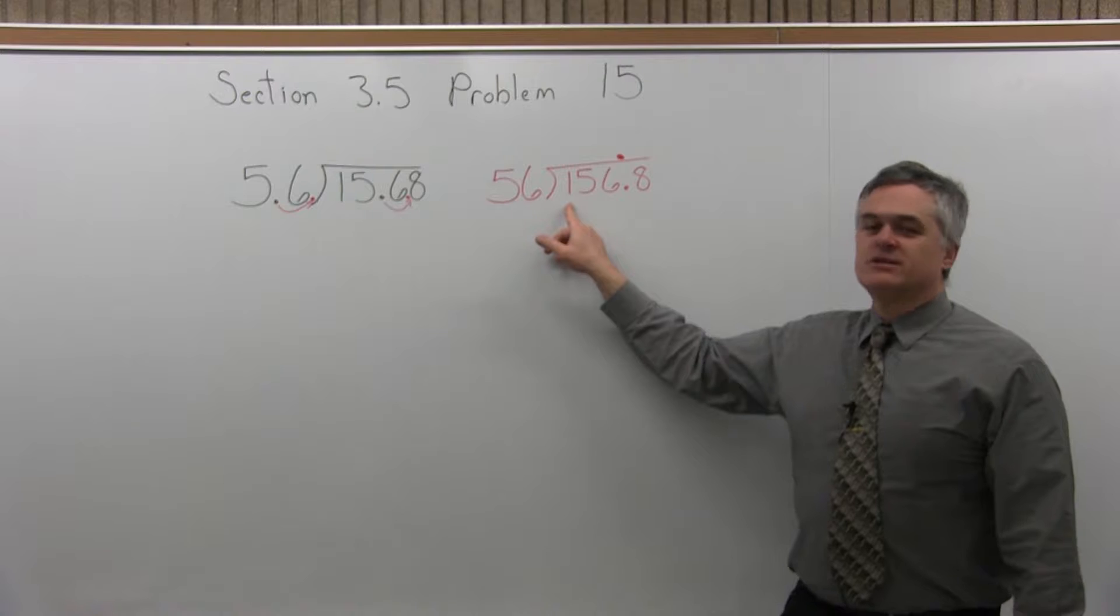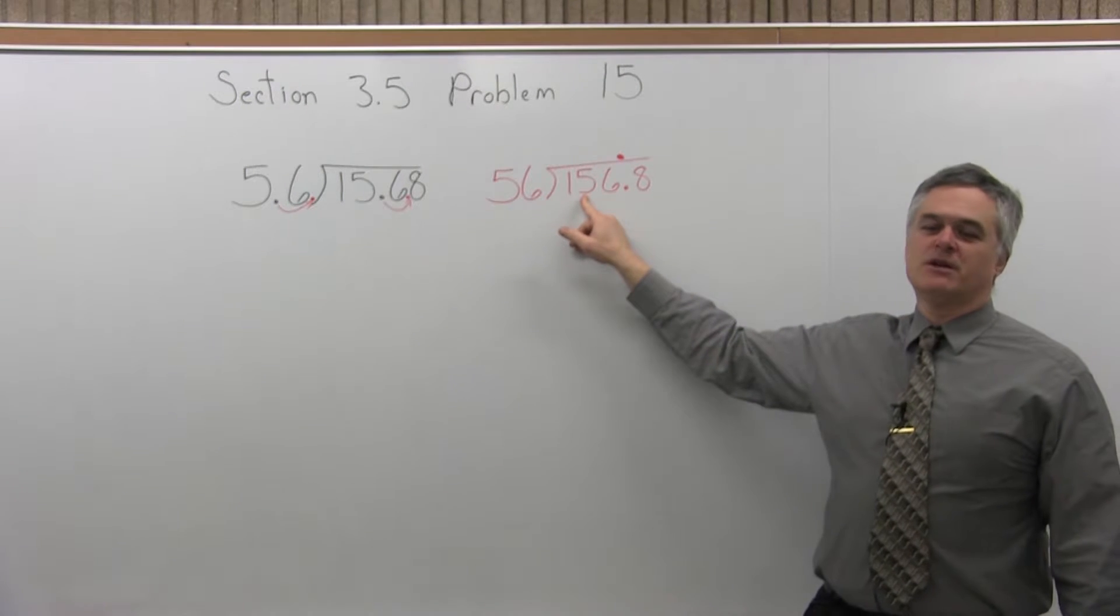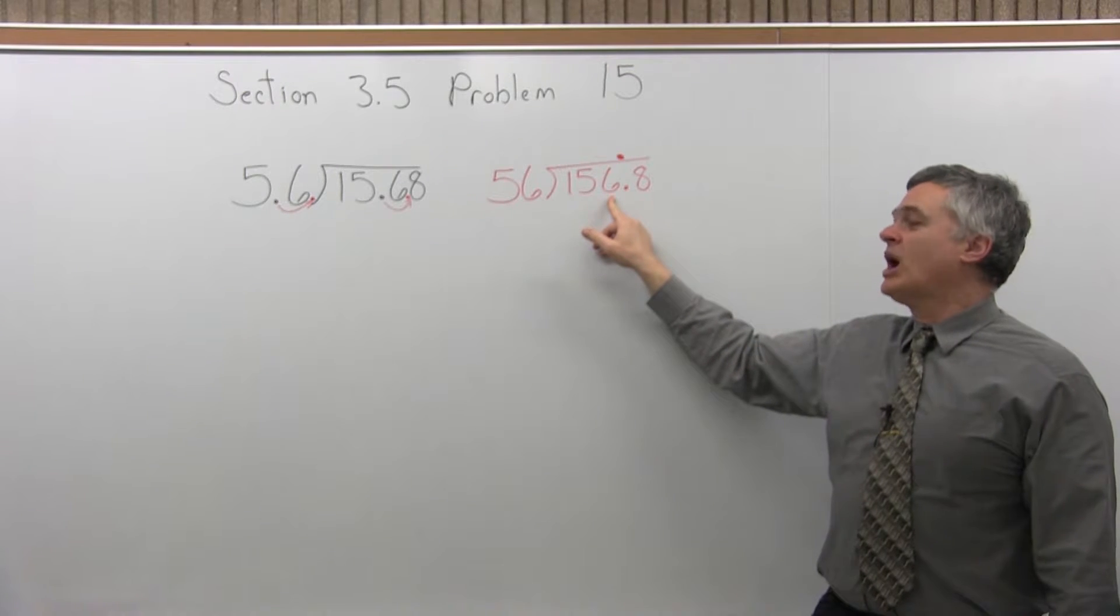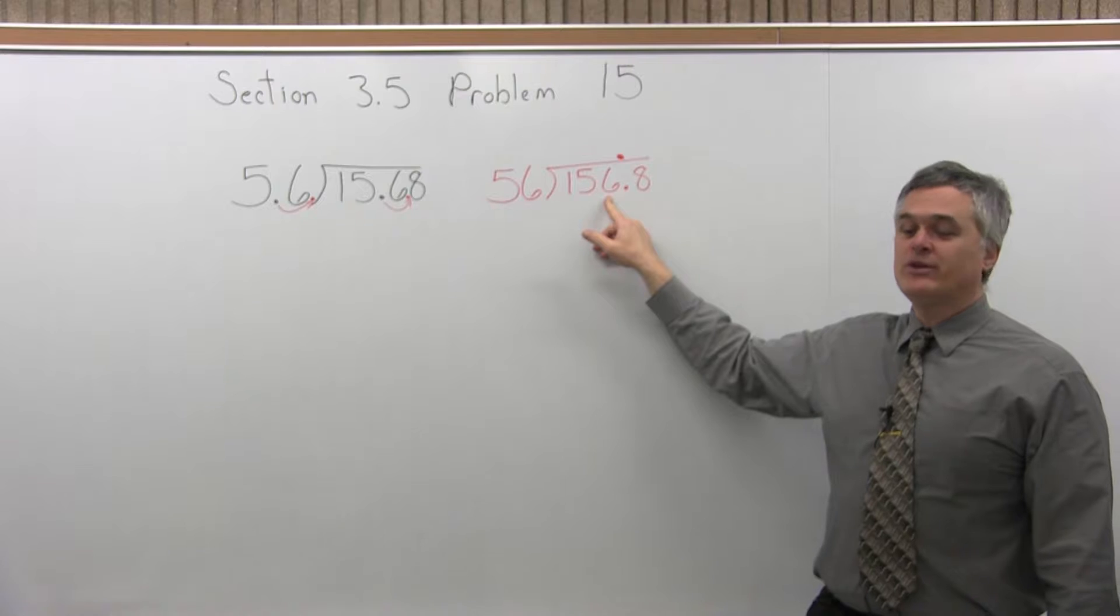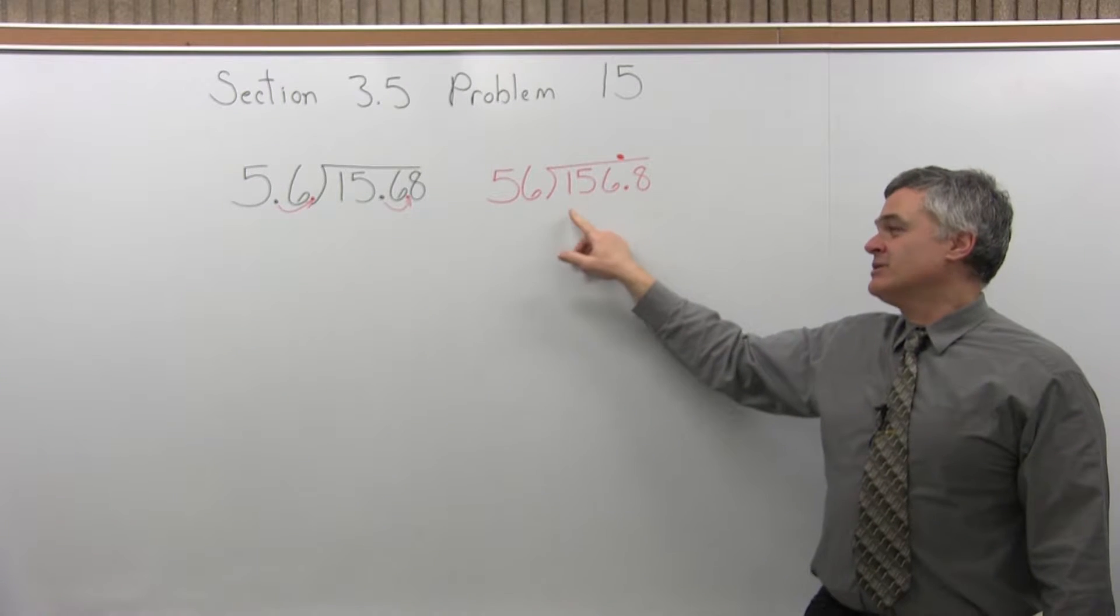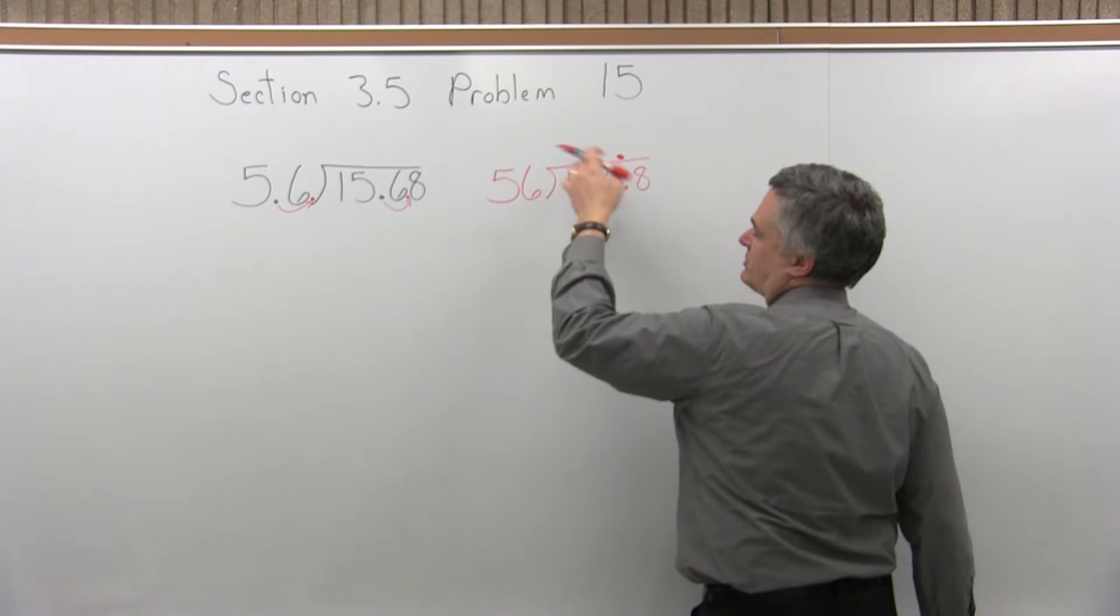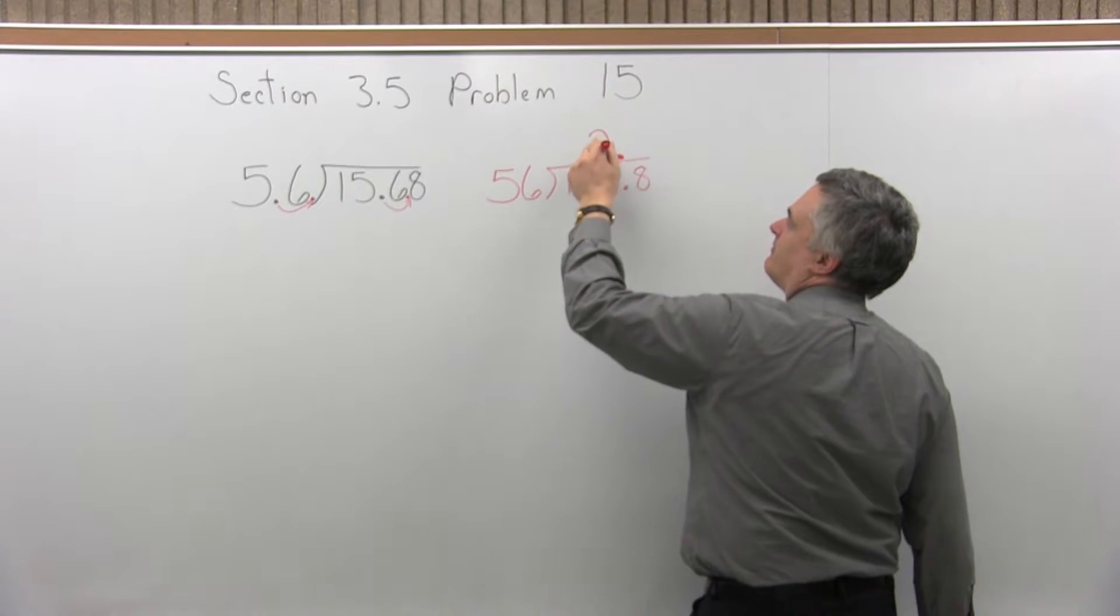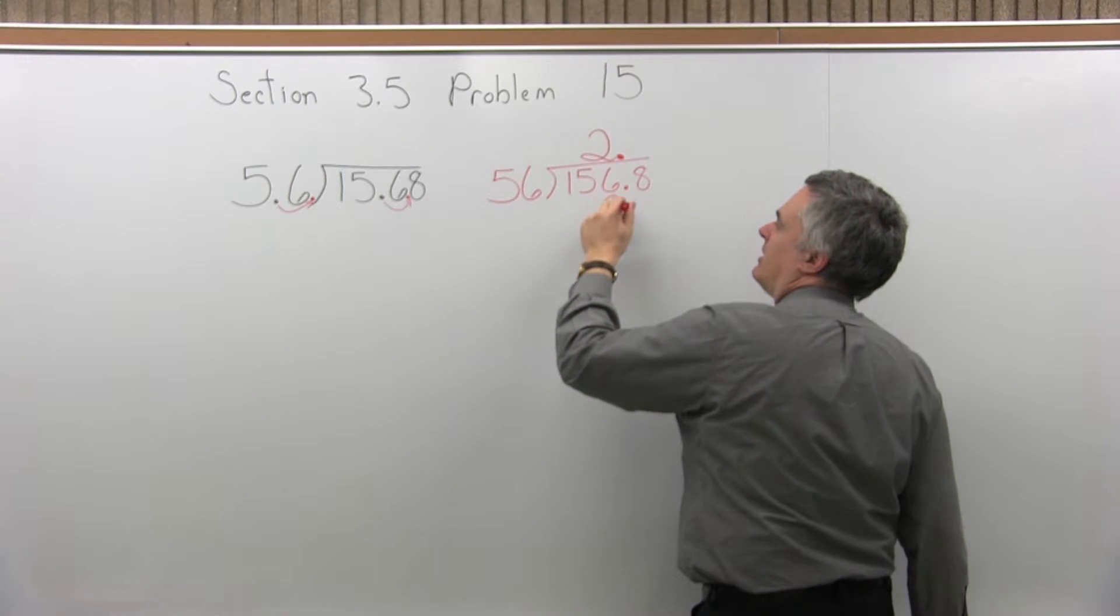So 56 divides into 1, 1's not big enough, it won't go. 56 divides into 15, still not big enough, it won't go. 56 divides into 156. That'll go, 3 won't quite do it. 3's a little bit too big. So it'll only divide in twice. If you do 3, it'll be bigger than 156. You'll see. But let's do 2.